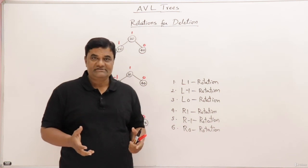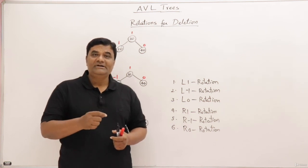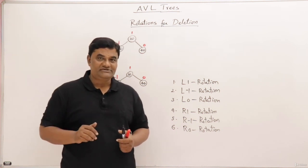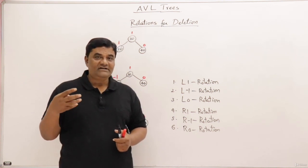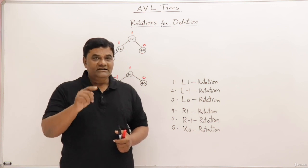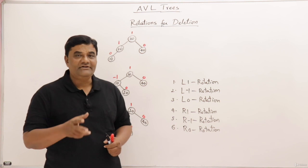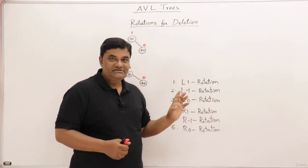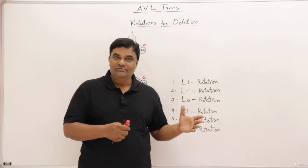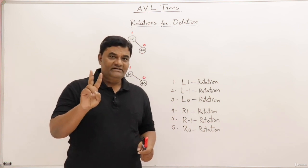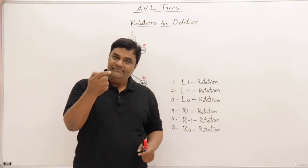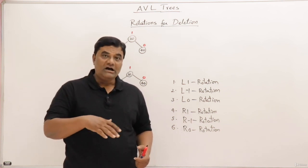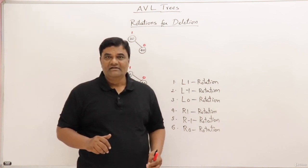AVL trees are height-balanced binary search trees, and height balancing is done with balance factors. If any node becomes imbalanced, we perform rotations for balancing it. We have already seen how rotations are performed at the time of insertion — if any node is imbalanced, there are four different types of rotation you can perform. At the time of deletion also, any node may become imbalanced, and there are six rotation types available.